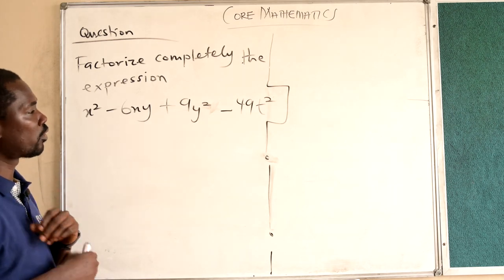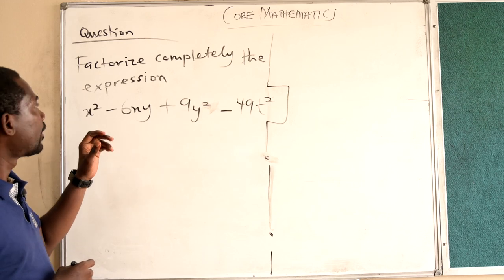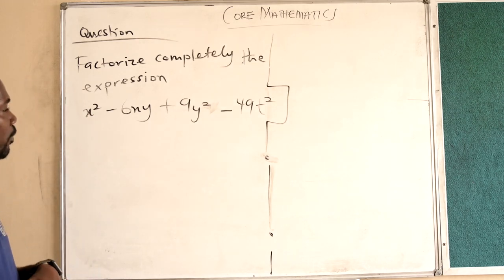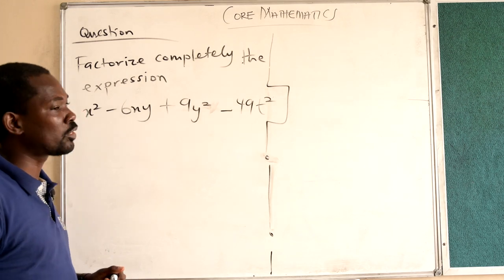Let us try and solve this question. Factorize completely the expression x squared minus 6xy plus 9y squared minus 49t squared.